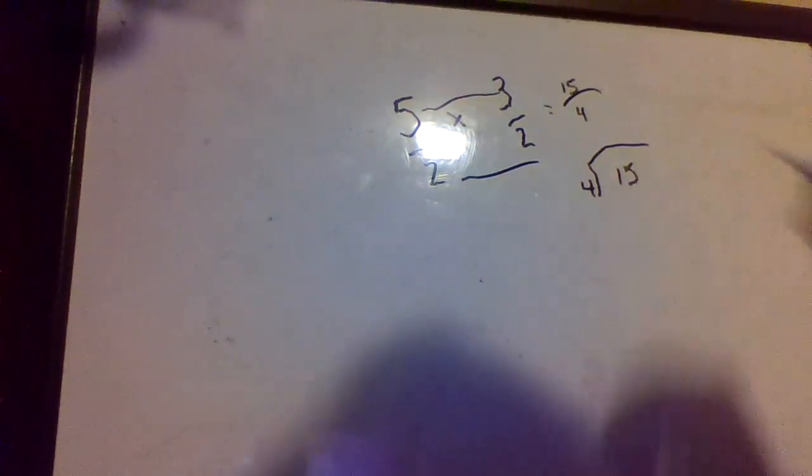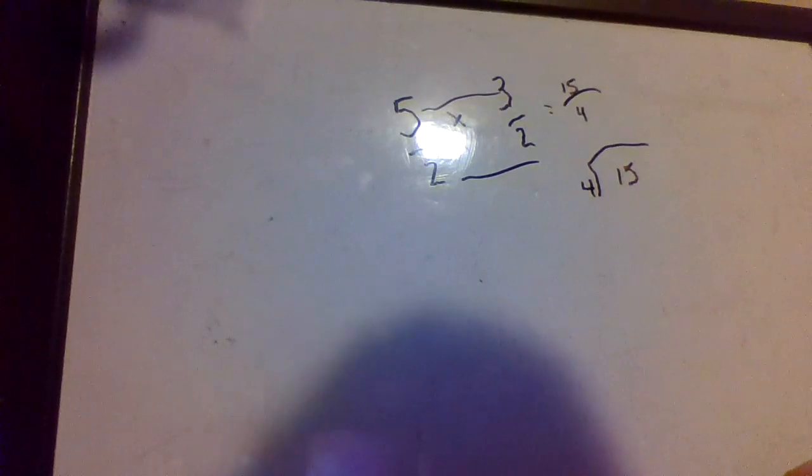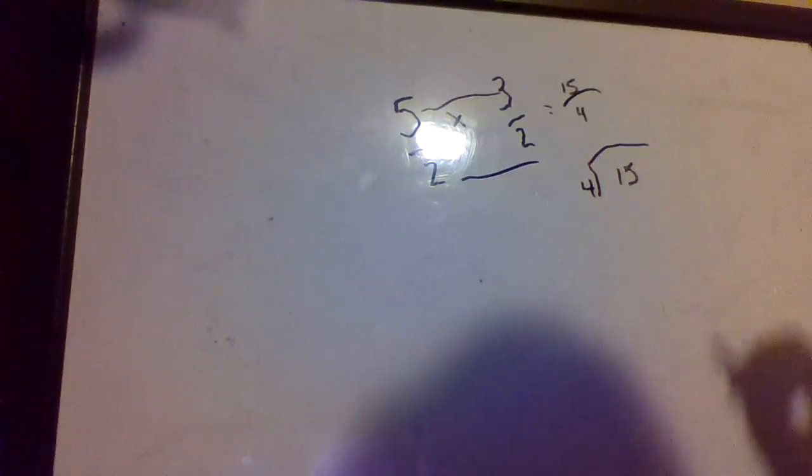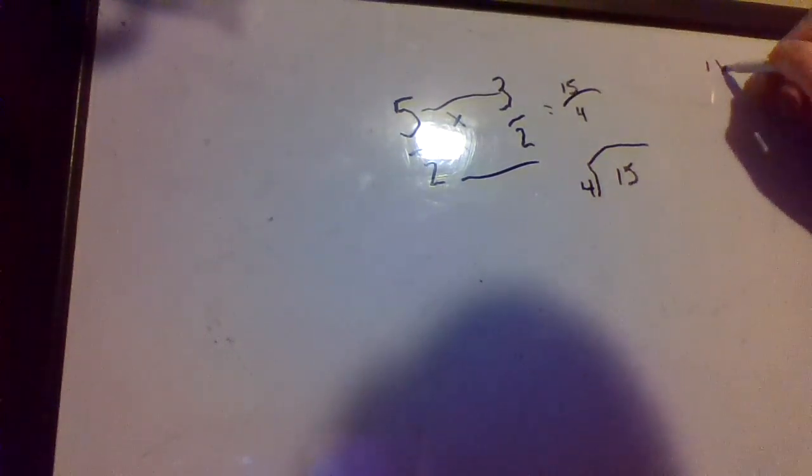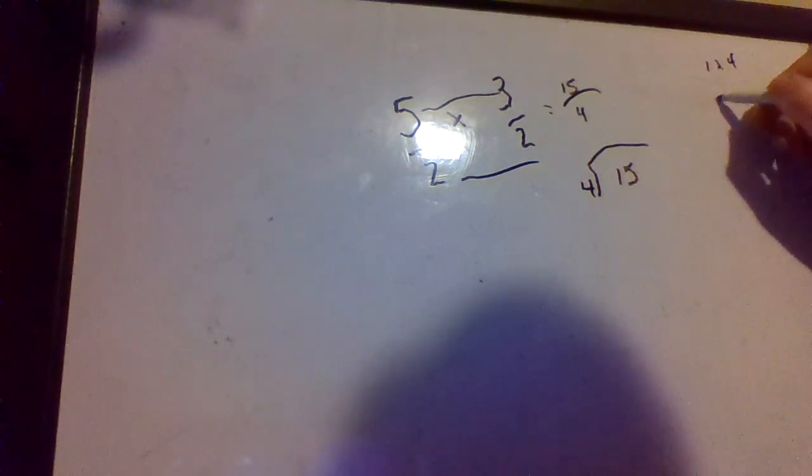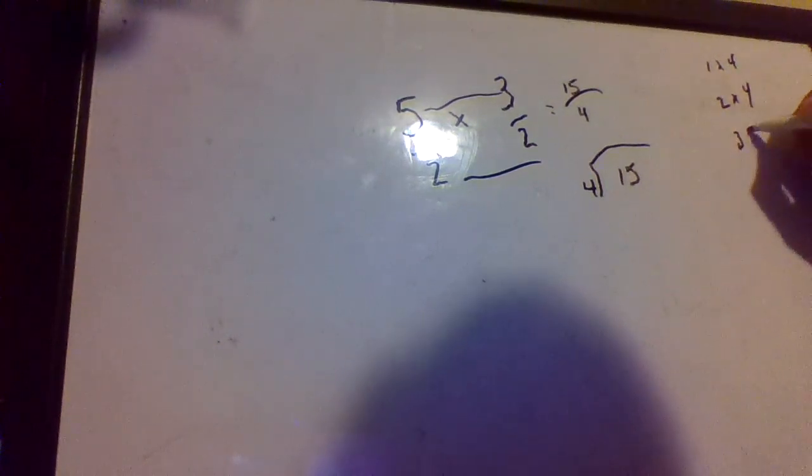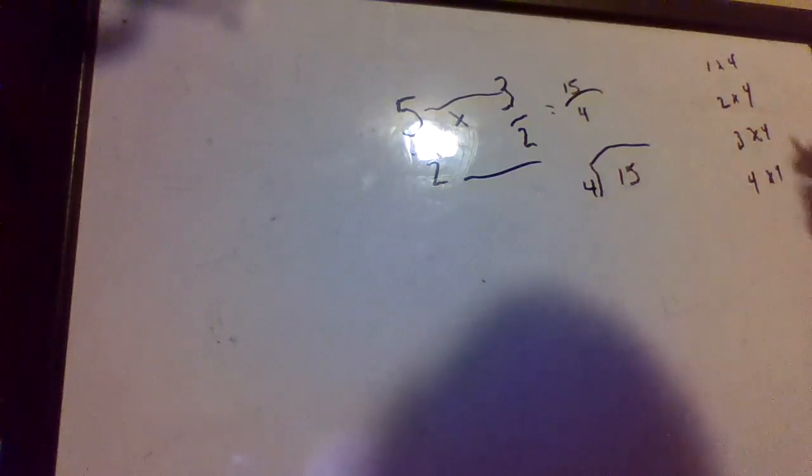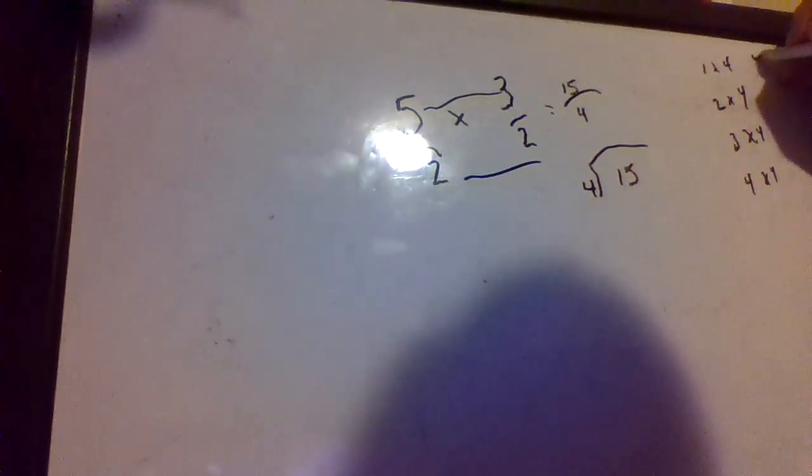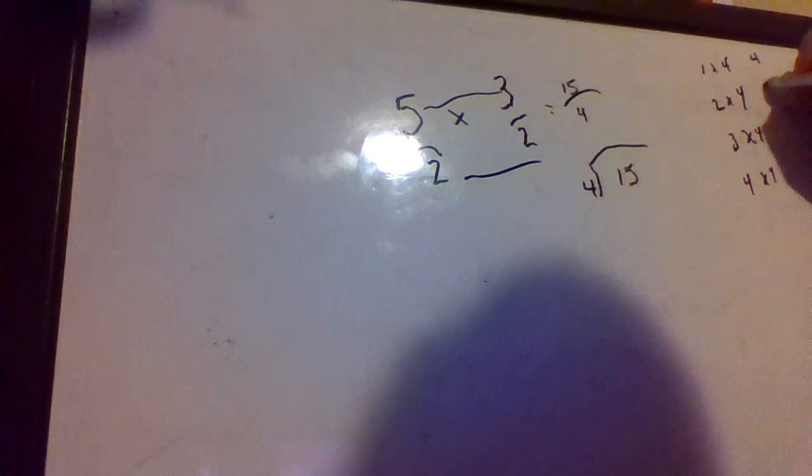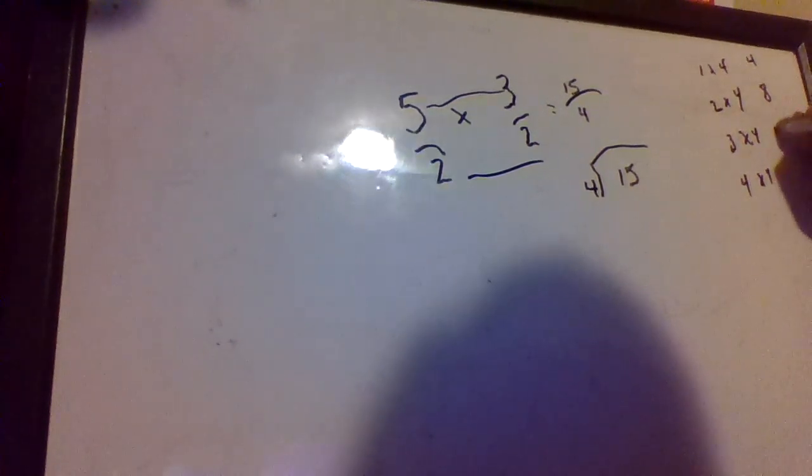So we're going to say how many times is 4 going into 15? Well, if you've watched my division videos thus far, the way that I'm going to recommend doing this if you don't know off the top of your head is write down your multiplication tables. And I know what I'm looking for, so I'm going to write them down: 4 times 1 is 4, 2 times 4 is 8, 3 times 4 is 12, and 4 times 4 is 16.